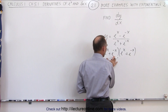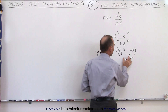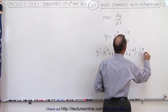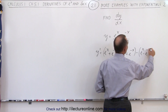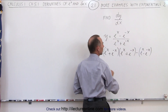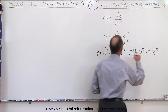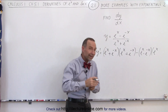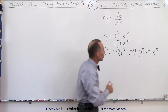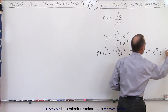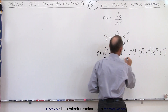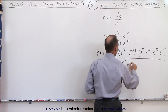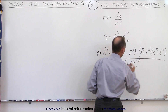So that's the denominator times the derivative of the numerator, minus the numerator (eˣ - e⁻ˣ) times the derivative of the denominator. The derivative of eˣ is eˣ, and the derivative of e⁻ˣ is -e⁻ˣ, so this becomes minus e⁻ˣ, all divided by the denominator squared: (eˣ + e⁻ˣ)².